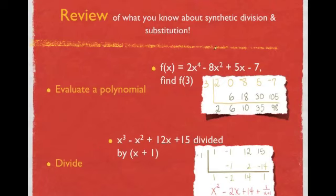Just to review a little bit of what you've already learned about synthetic division and substitution. Remember that you can evaluate a polynomial using synthetic substitution. Here, we're looking for where x is 3, so we use 3 here, and we get these numbers from the coefficients. The x to the third is missing, so that's where the zero place comes from, the negative 8, the 5, and the negative 7.